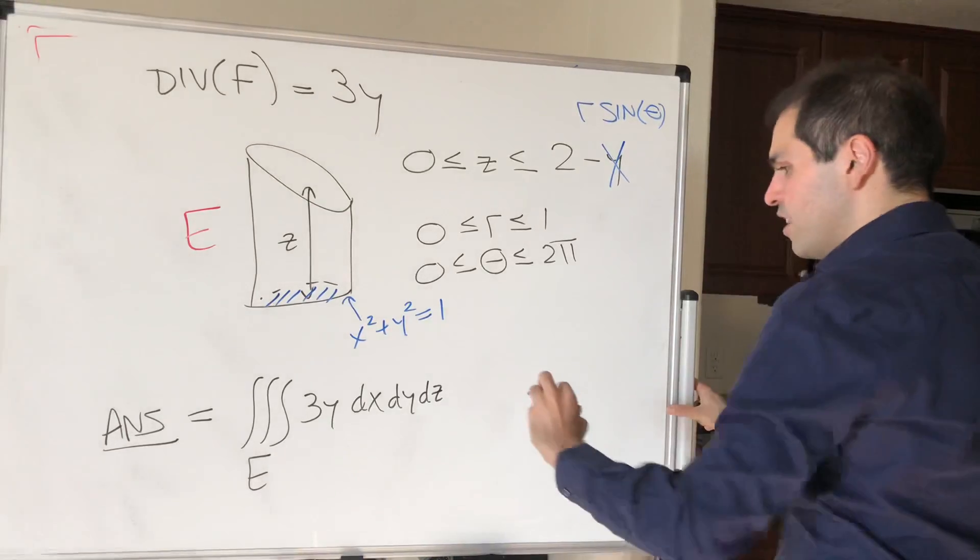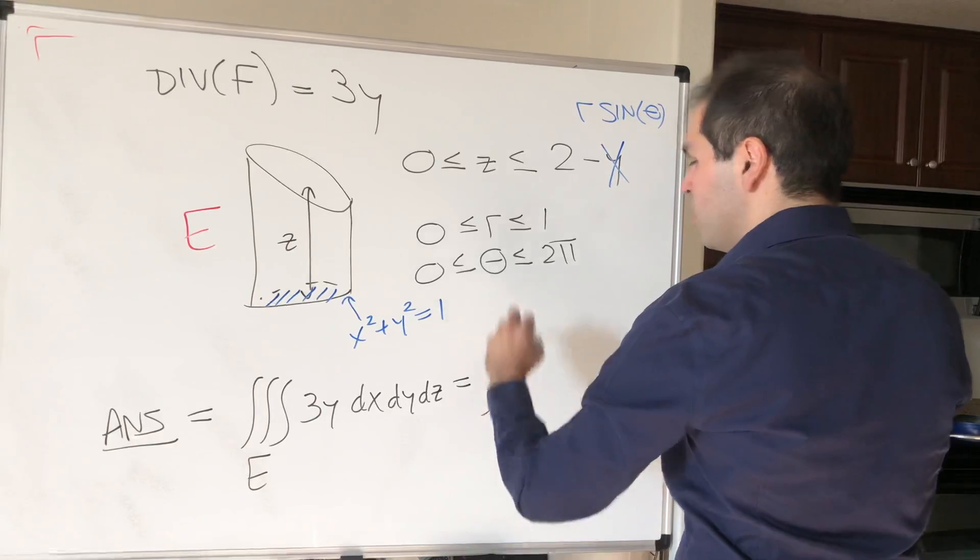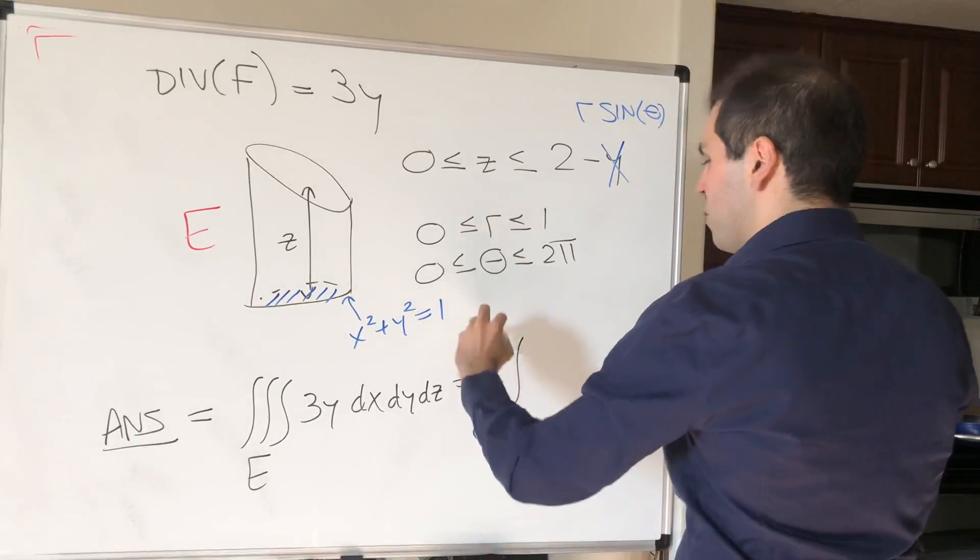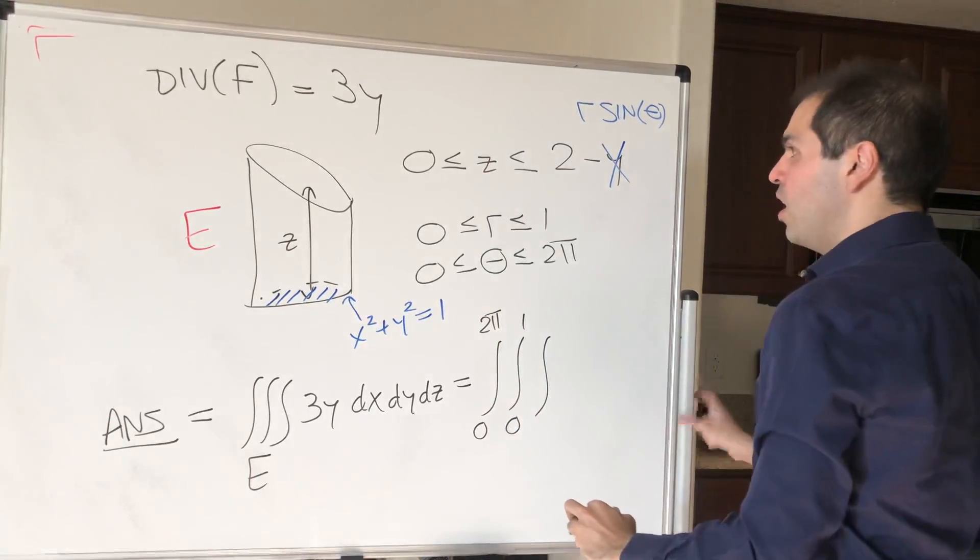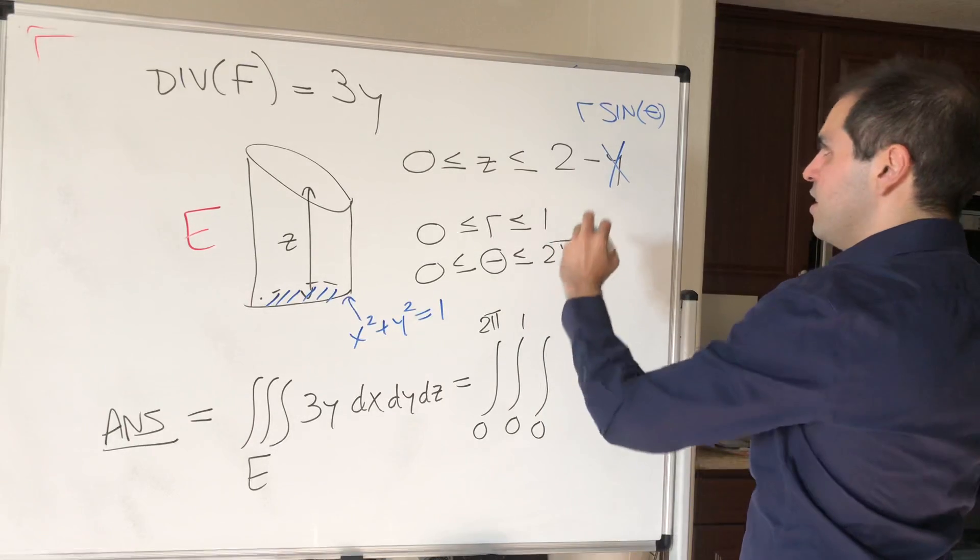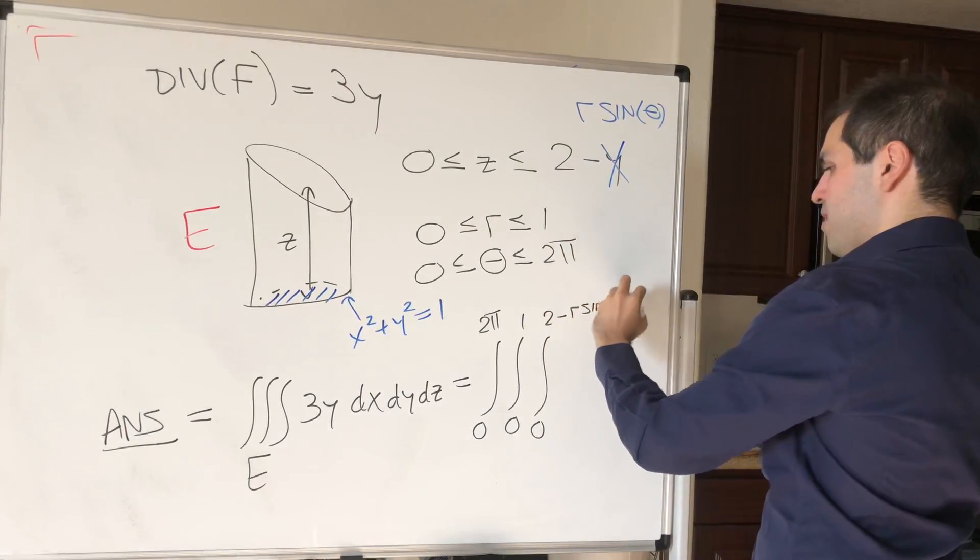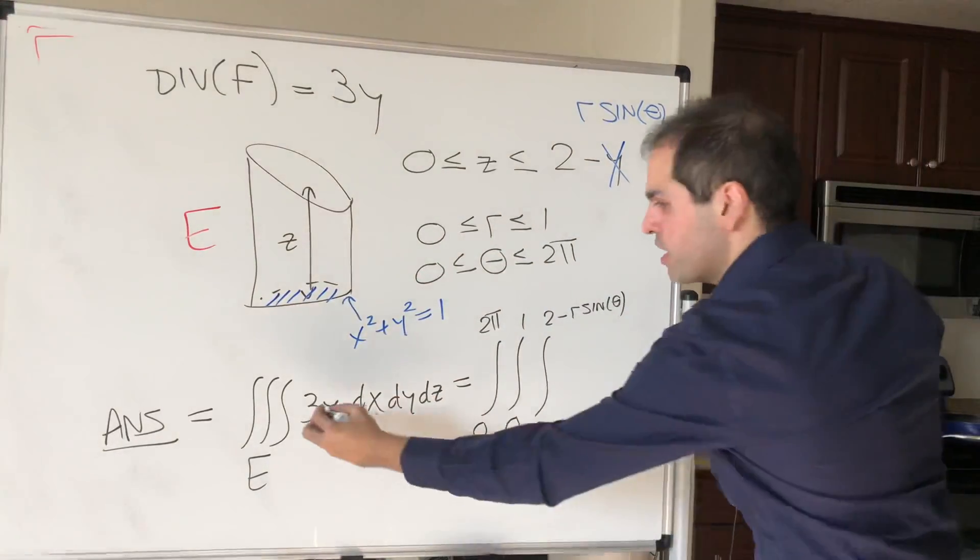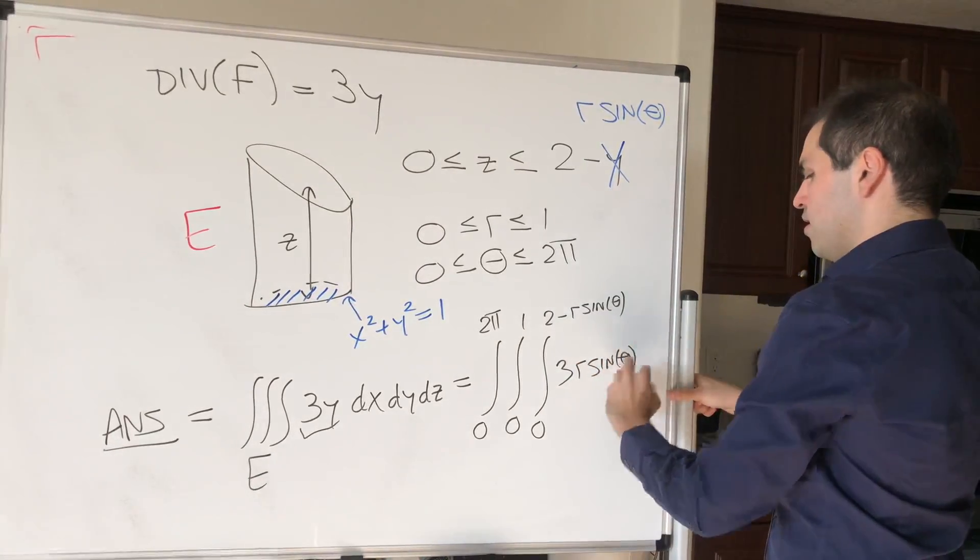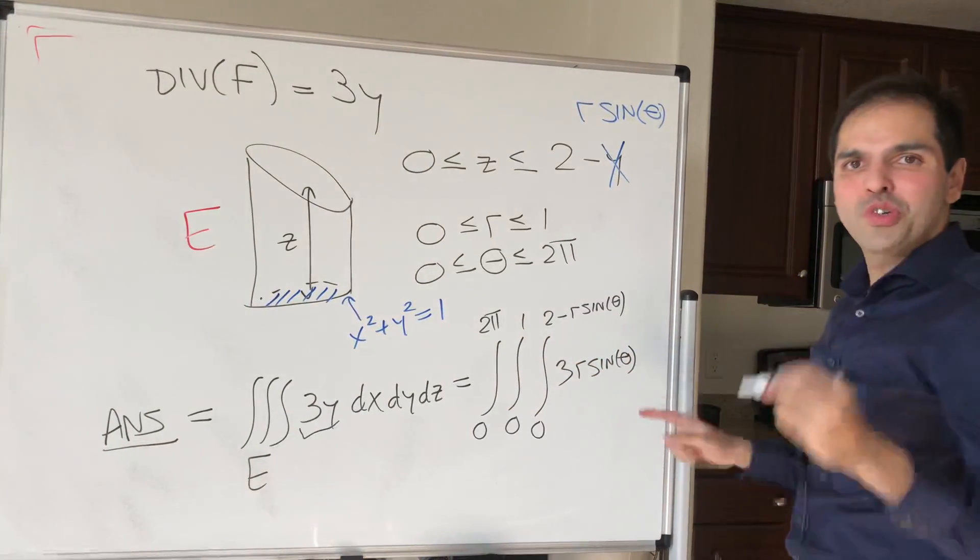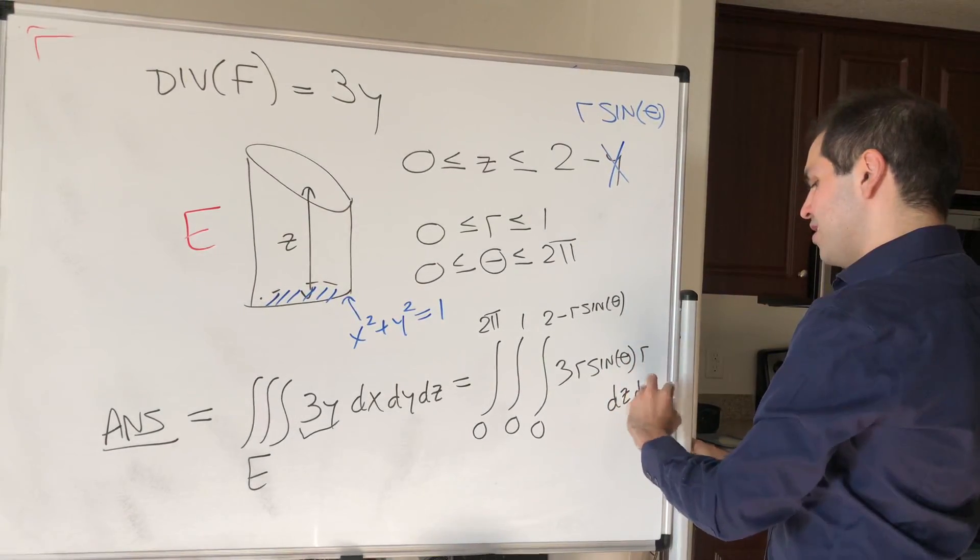And that then becomes as follows. So the radius is between 0 and 1, the angle between 0 and 2 pi, so let's do integral from 0 to 2 pi, integral from 0 to 1, z is between 0 and 2 minus r sine of theta, and we had the function 3y, which is 3r sine of theta, and then remember the usual r dz, and I think dr d theta.